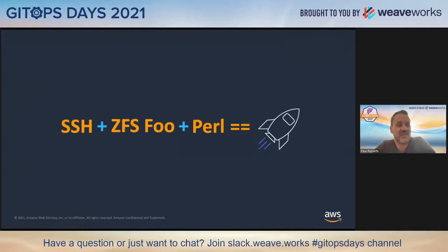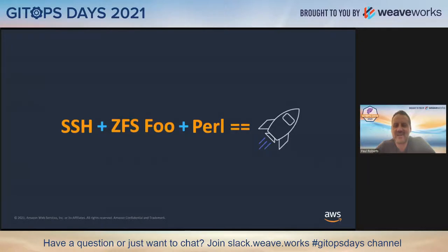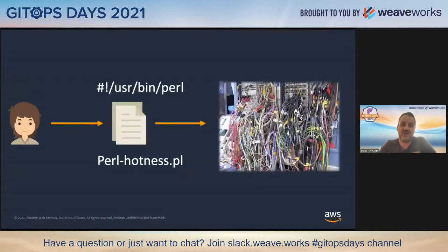So what did I come up with? Going back to the 2006 timeframe, how would people automate back then? I started thinking: I can use some SSH automation, push some keys everywhere. We had this really cool file system — the Zettabyte File System, or ZFS — so we could create some snapshots. And the third part was pulling out some Perl kung fu. I ended up building a lot of tooling that would use SSH, ZFS, and Perl to help build this automation.